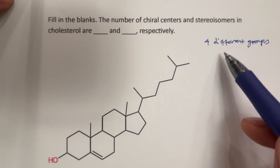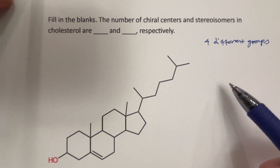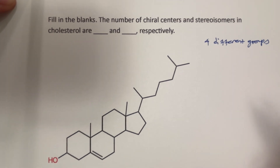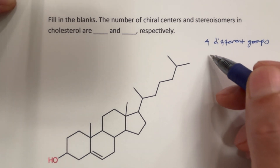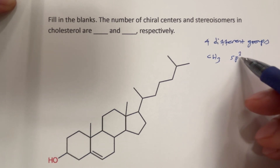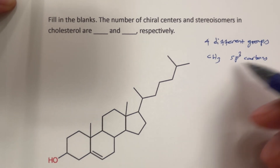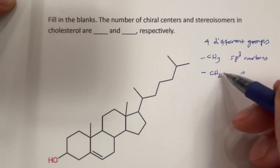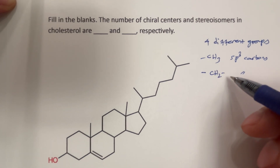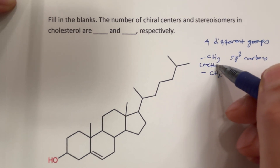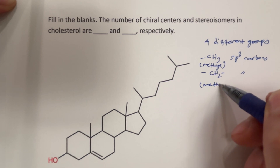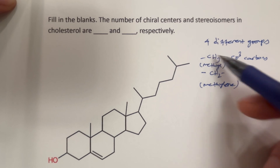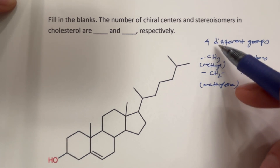So we need to see whether each carbon is attached to four different groups or not. The best way to do this is to eliminate the ones that are not. We can eliminate methyl groups — sp3 carbons. If it is a methyl group, we can also eliminate CH2 (methylene) groups — also sp3 carbons. Because even if it is connected to one other group, it becomes only two different groups in total, not four different groups.